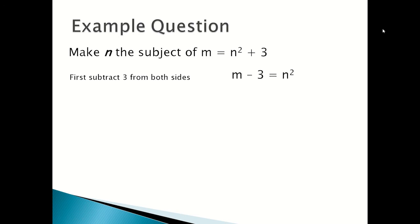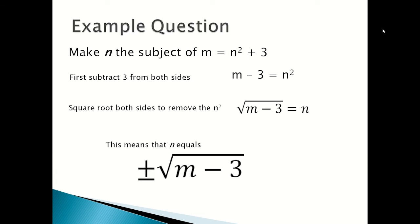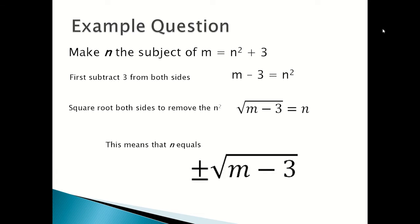So you'll get m minus 3 equals n squared. Next, square root both sides to remove the n squared, and you'll get the square root of m minus 3 equals n. Which means that n equals plus or minus the square root of m minus 3. You put plus or minus because there are two possible answers — one could be positive and the other could be negative.